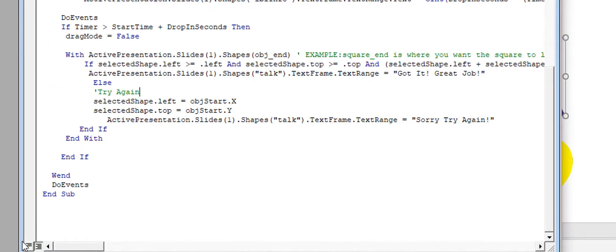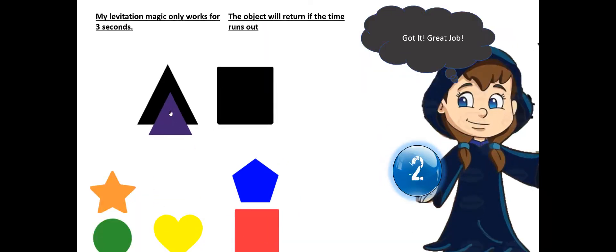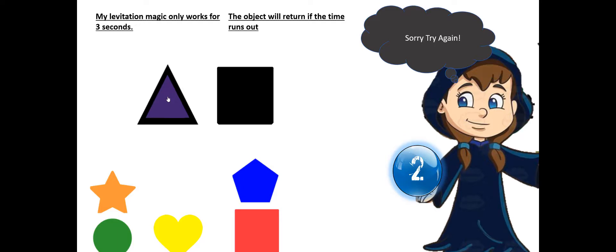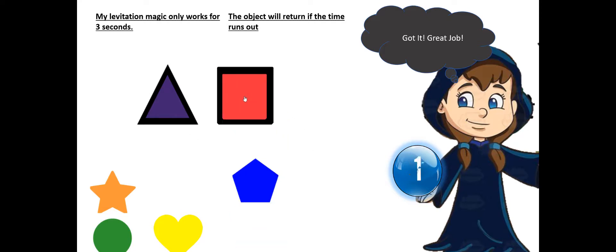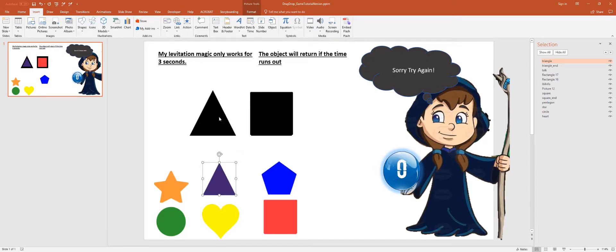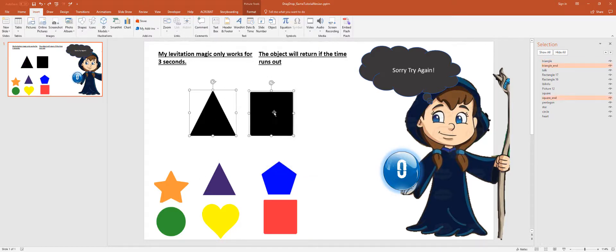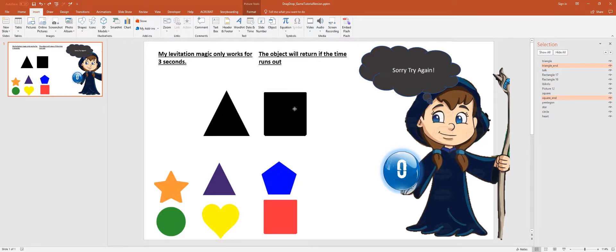That should solve any issues. Now the true test is running it and seeing if it works. If I drag it out it pops back — good. Come over here and got it. Great job, we actually have ourselves a working program. Now technically all I need to do is the same thing for all the other shapes.